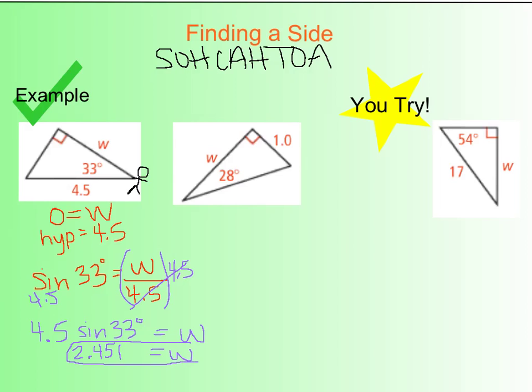Now that is an approximate answer. For the end-of-course exam, they may ask you for an exact answer. So what you could do is leave it as 4.5 sine 33. Once you've gotten to that point, I know you have the correct answer — you just need to punch it into a calculator that can evaluate 4.5 sine 33. So let's look at the next example.